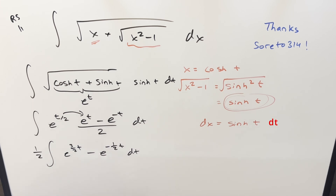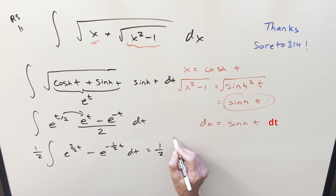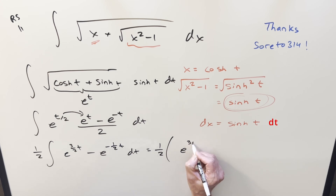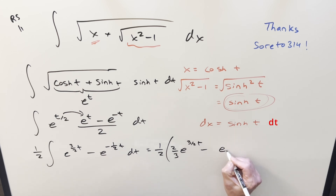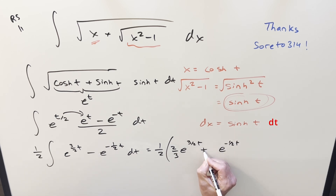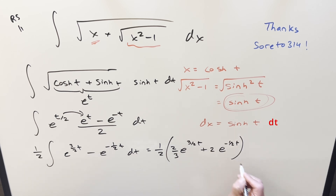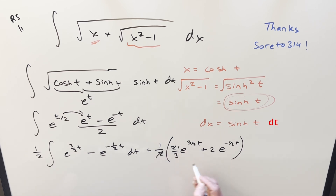We can just go ahead and integrate. We have 1 half times: e to the 3 halves t, taking the reciprocal gives 2 thirds, minus e to the minus 1 half t, taking the reciprocal gives plus 2. Distributing in the 1 half turns the 2 thirds into 1 third and the 2 into 1.